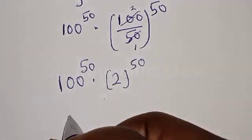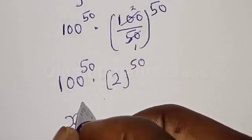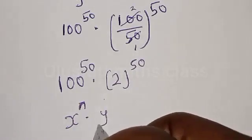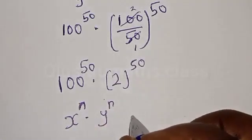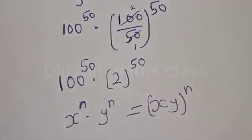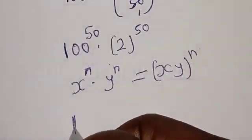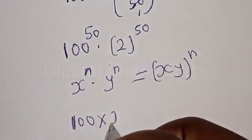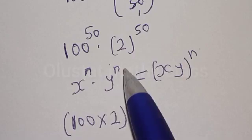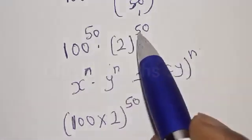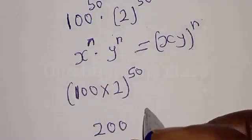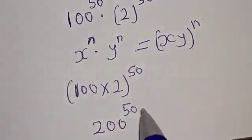Remember that if you have S raised to power N multiplied by Y raised to power N, this equals S times Y raised to power N. Then we have 100 multiplied by 2 raised to power 50, because our S is 100 and Y is 2, and N is 50. So we have 100 times 2, which is 200 raised to power 50. This is the final answer.